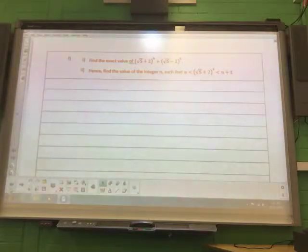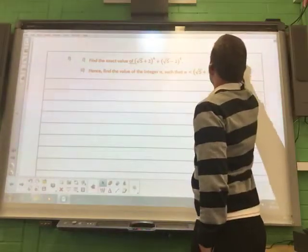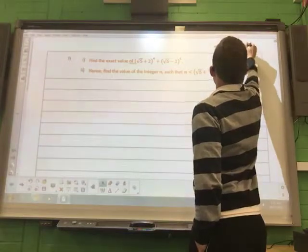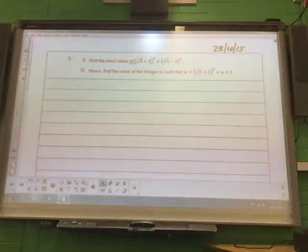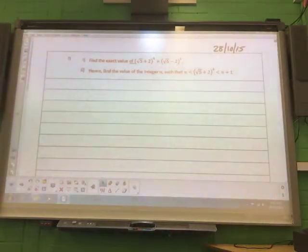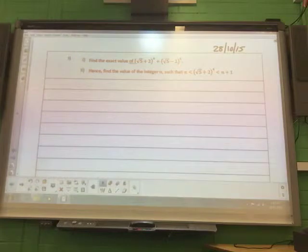Alright, so we're finishing up further proofs. So one more to do before we finish the topic. Alright, so we need to find the exact value of root 5 plus 2 to the power of 4 plus root 5 take away 2 to the power of 4.